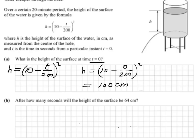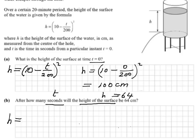The next part asks: after how many seconds is the height of the surface 64? Notice again — seconds, we call that t; height of the surface, we call that h. He wants the height to be 64, so h equals 64. Again it's a matter of converting English to maths. We have our equation with t and h, so it's a matter of filling in the equation: h equals 10 minus t over 200, all squared.